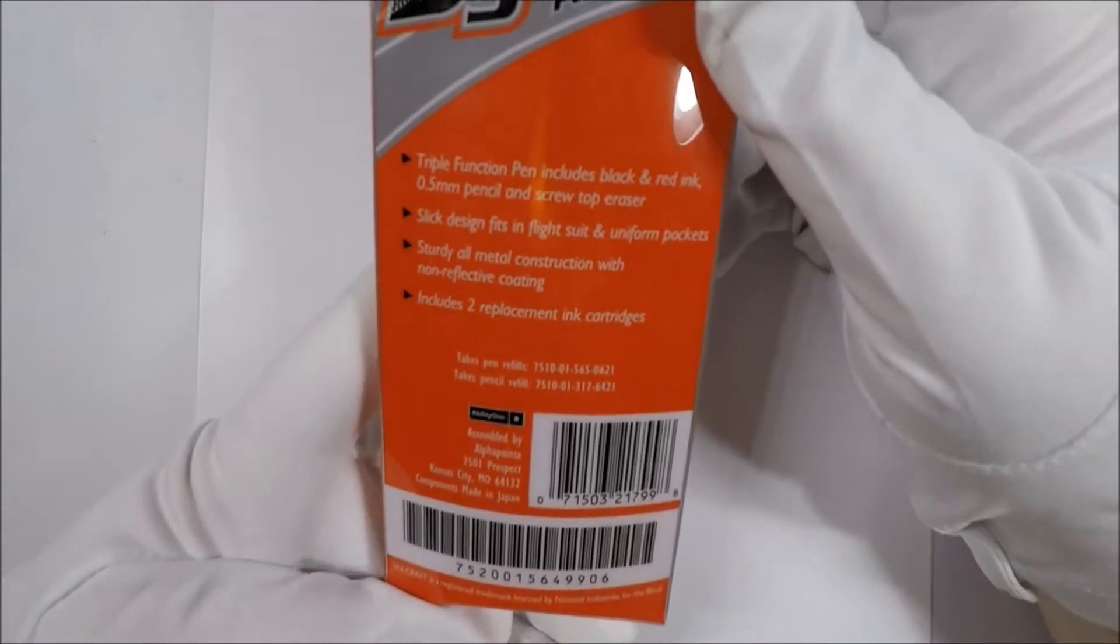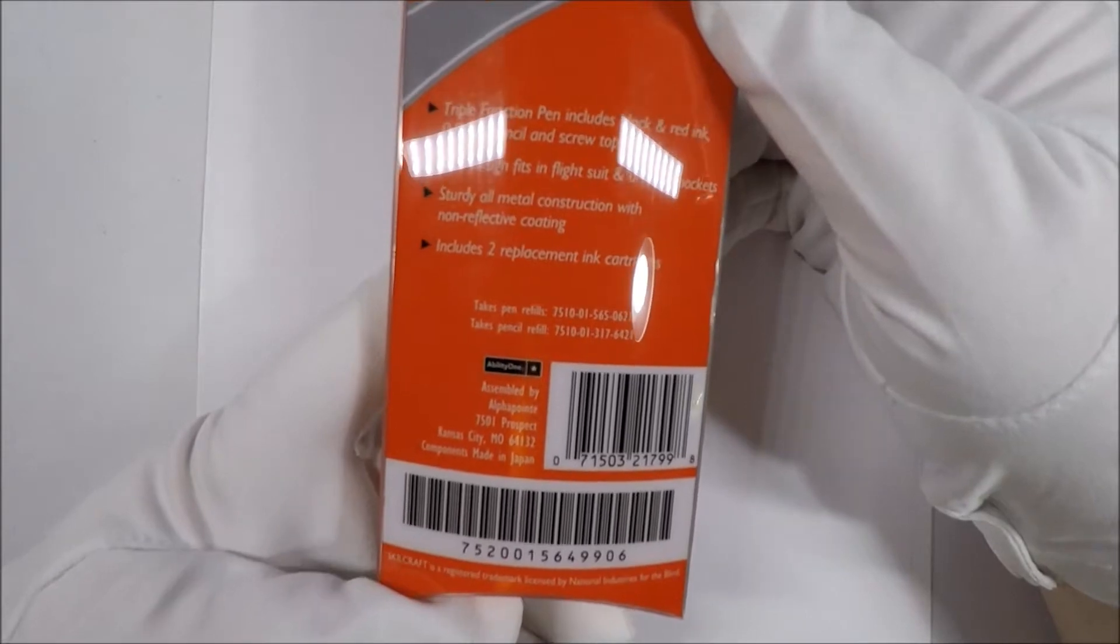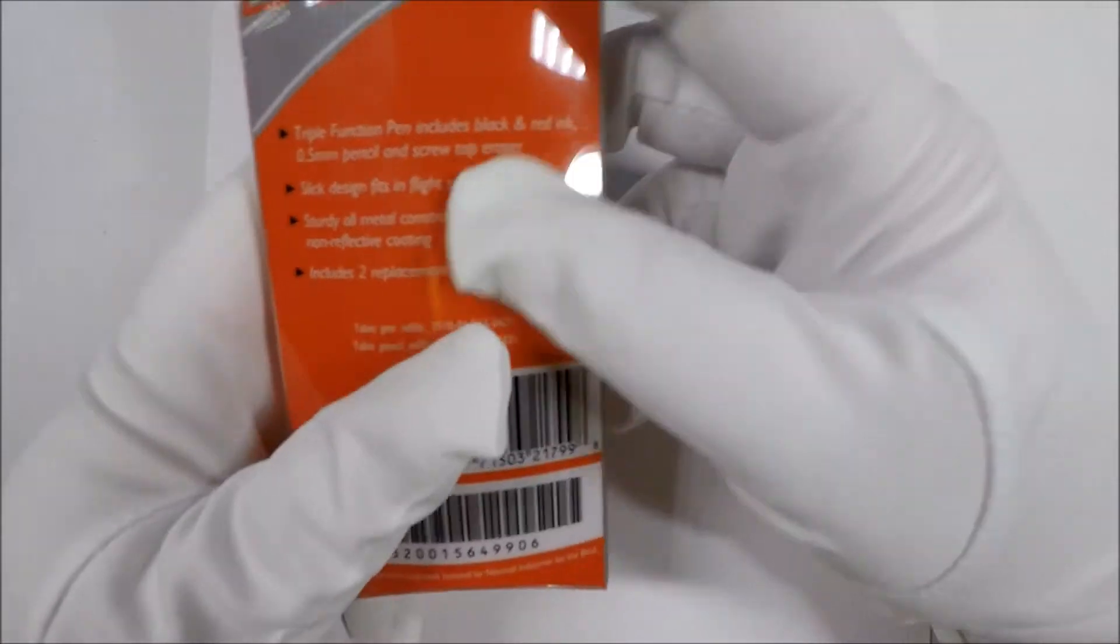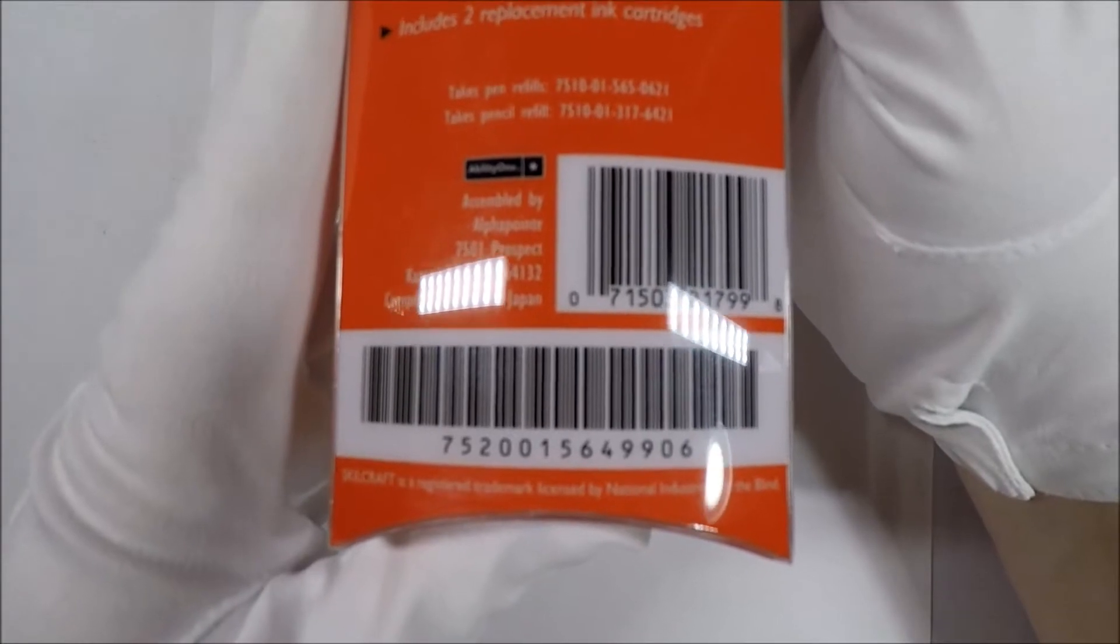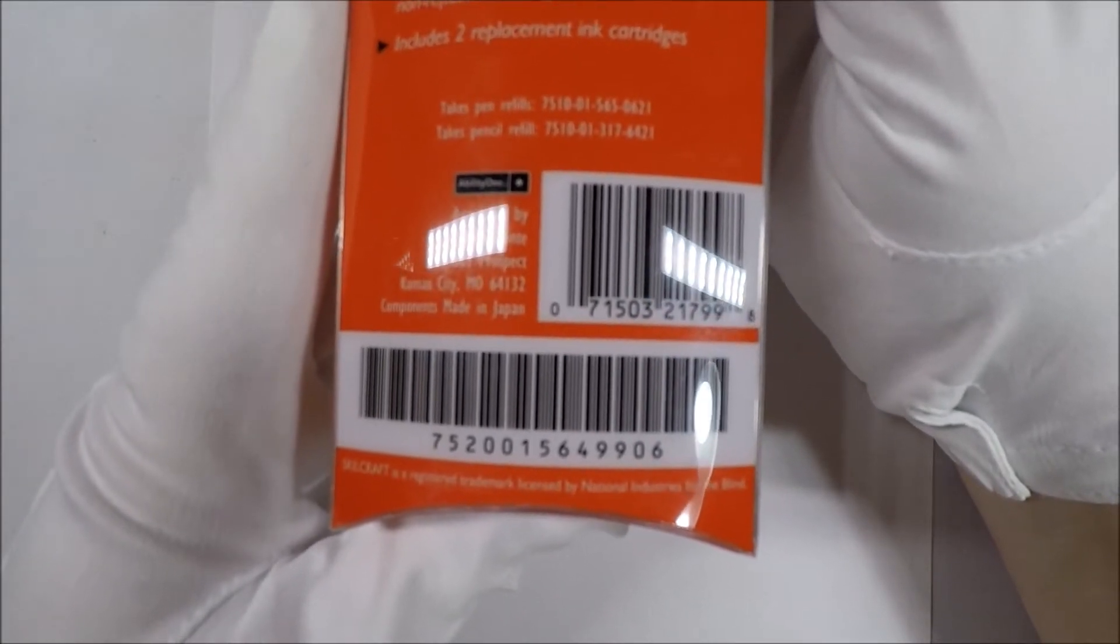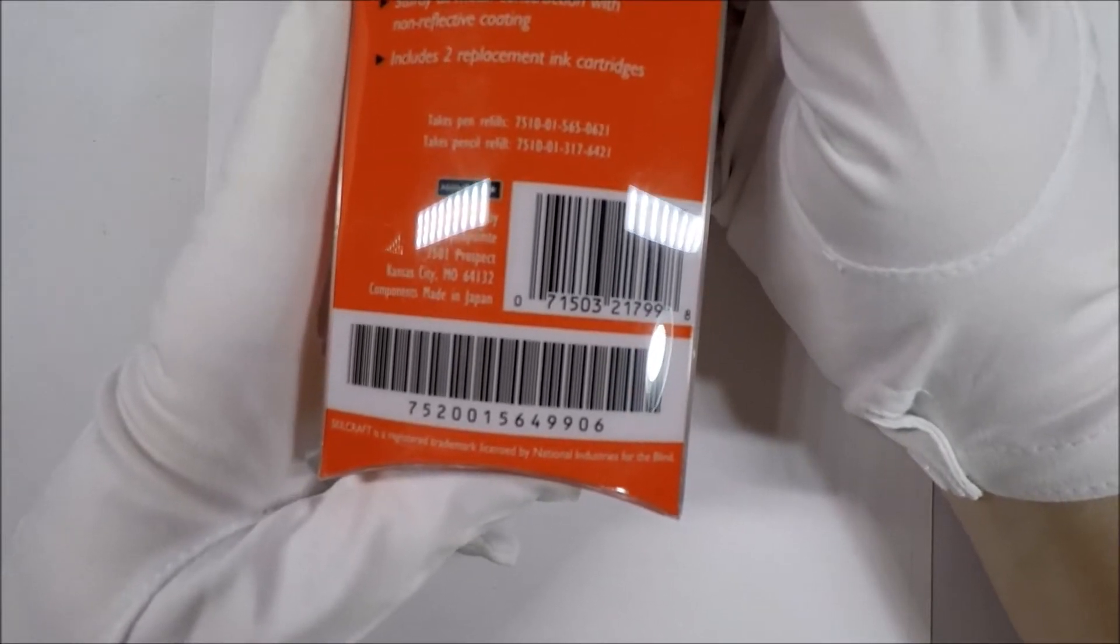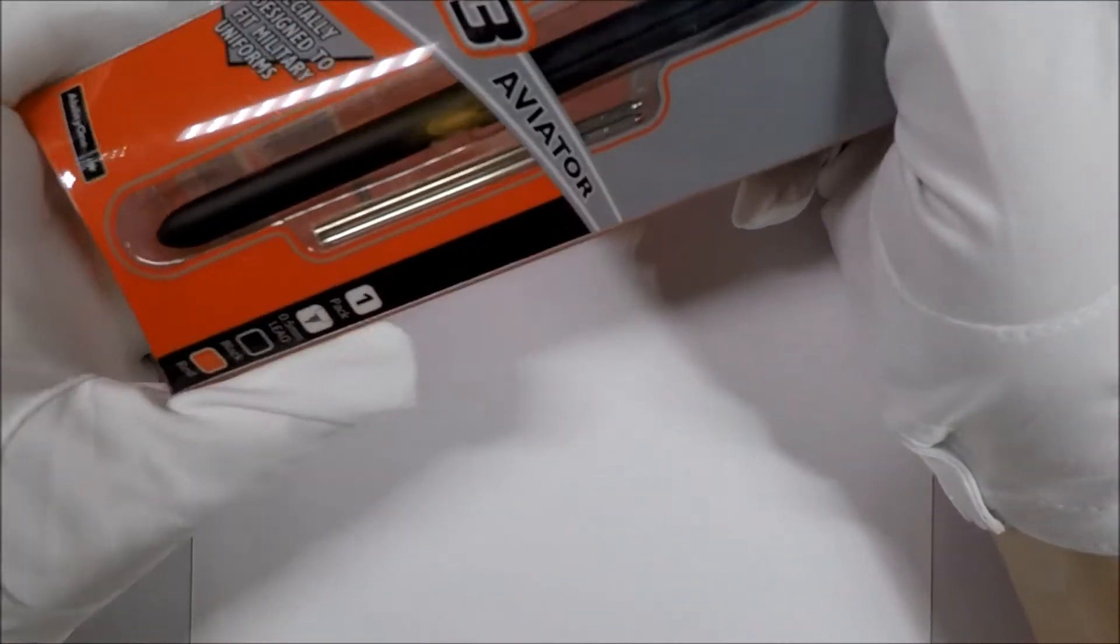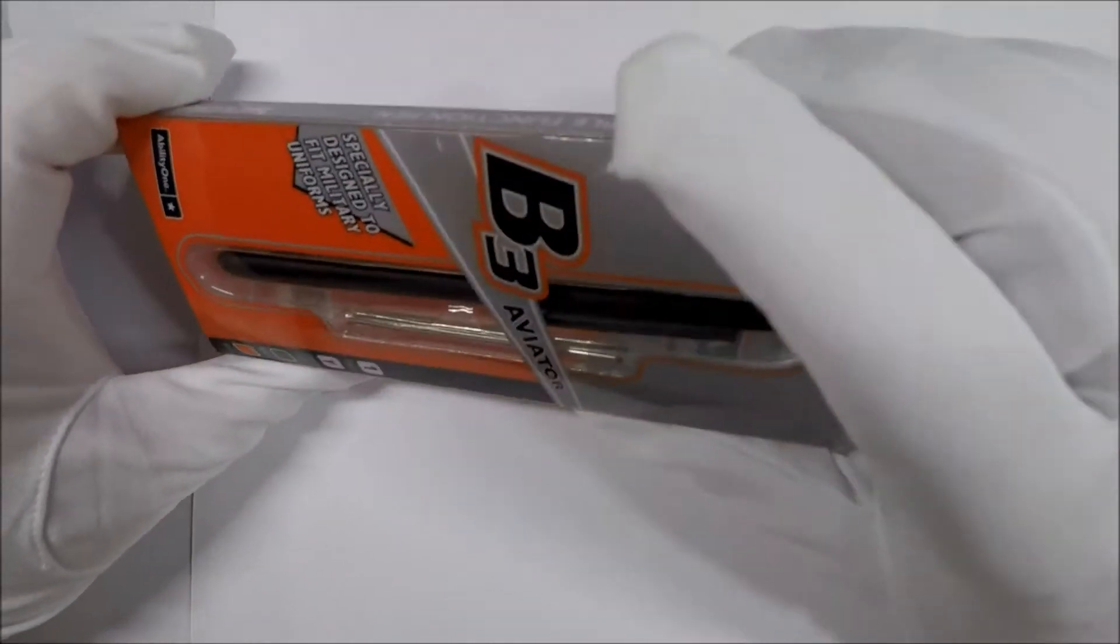Components are made in Japan and it's assembled in the US. Alright that's interesting. It says at the bottom, Skillcraft is a registered trademark licensed by the National Industries for the Blind. Okay well that does explain one of the things in the description I saw on Amazon. It said made with pride by Americans who are blind. So it's kind of cool.